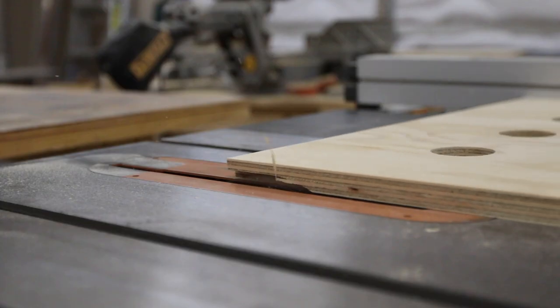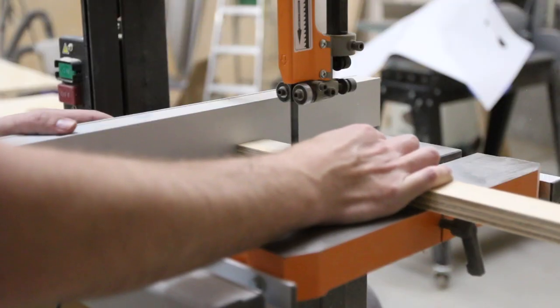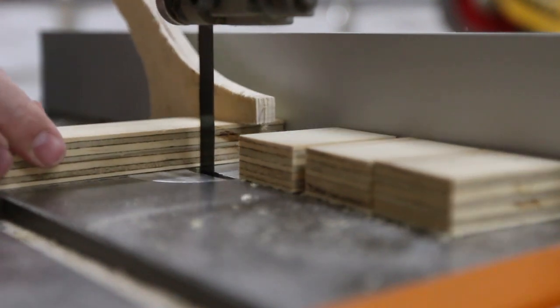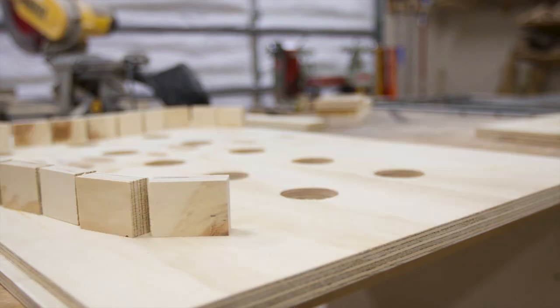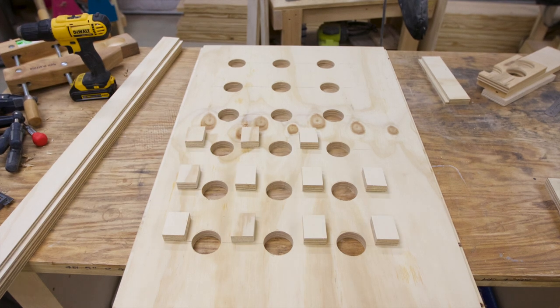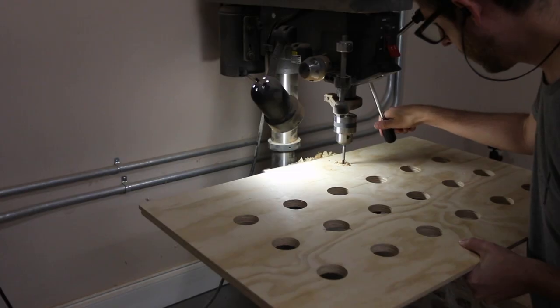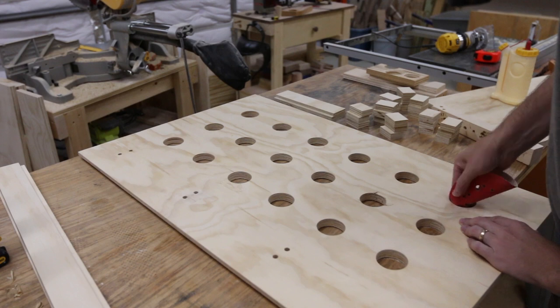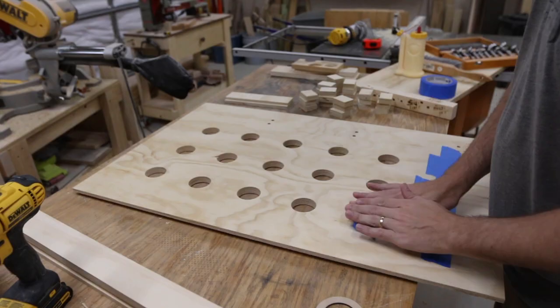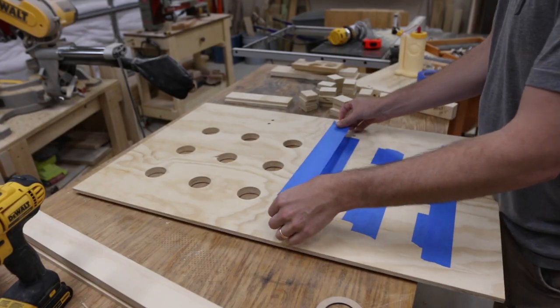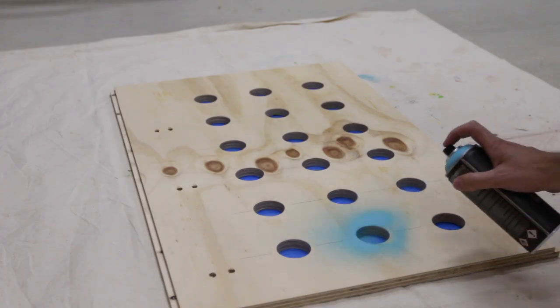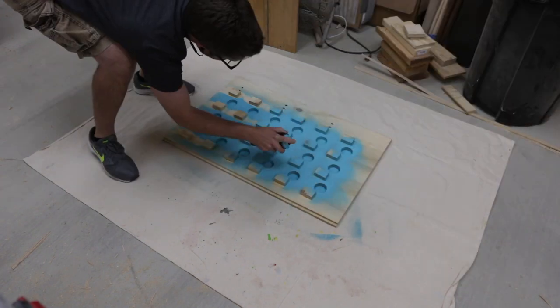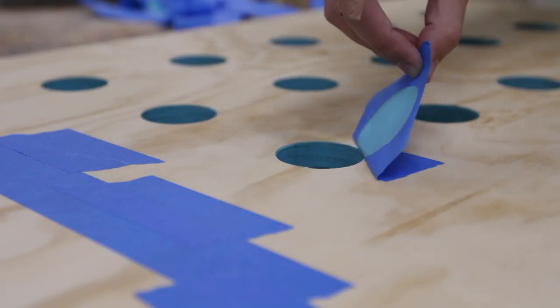This was my first time using a dado stack, but after getting it dialed in it was very easy to use. After all of the holes were drilled, I used some tape on the front side of the holes to mask off so I could paint the inside of the holes. I used Montana black paint, and if you've never tried it out, it is definitely worth the hype. The coverage is considerably better than most other paints.